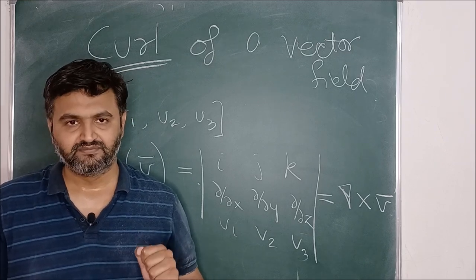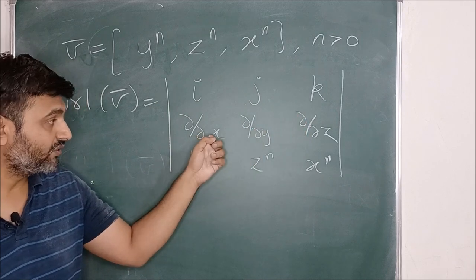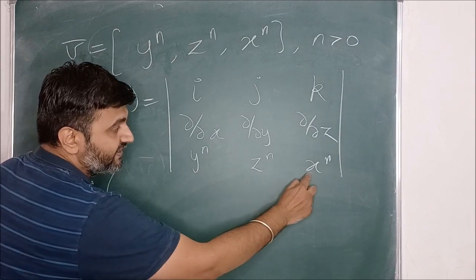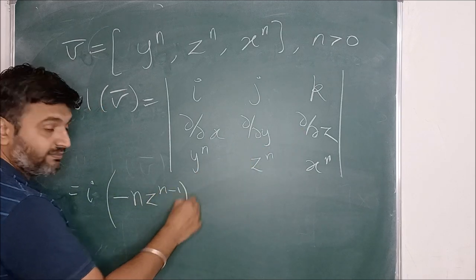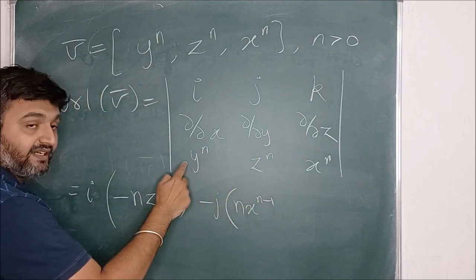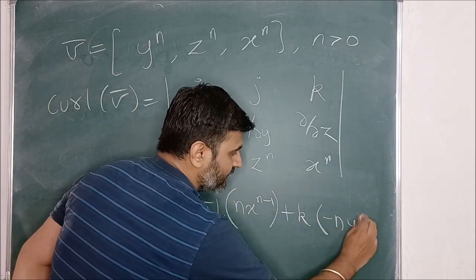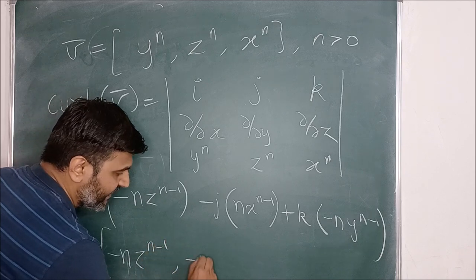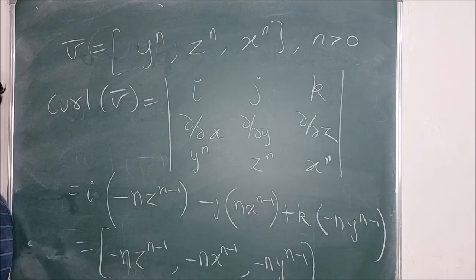Let's take an example. Suppose a vector field is given and we want to find its curl. The curl of V is the determinant with rows i, j, k; ∂/∂x, ∂/∂y, ∂/∂z; and components y^n, x^n, z^n. Computing: i·(∂(x^n)/∂y − ∂(z^n)/∂z) gives −n·z^(n−1); −j·(∂(x^n)/∂x − ∂(y^n)/∂z) gives −n·x^(n−1); k·(∂(z^n)/∂x − ∂(y^n)/∂y) gives −n·y^(n−1). So the curl is (−n·z^(n−1), −n·x^(n−1), −n·y^(n−1)).